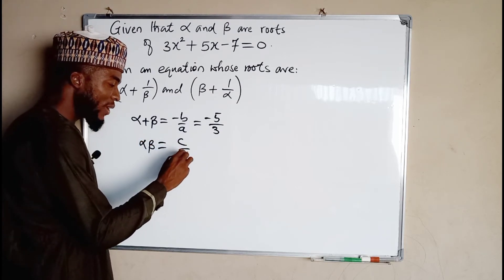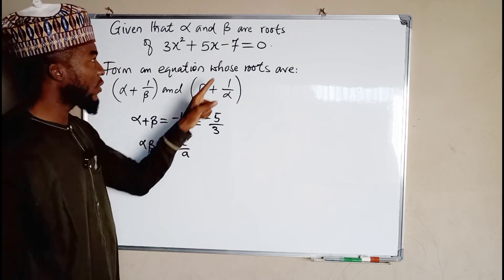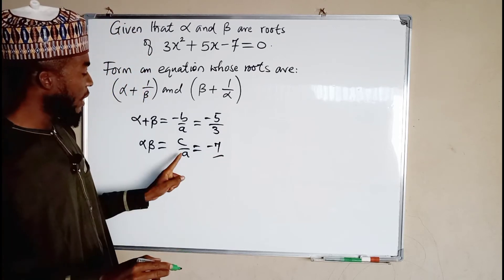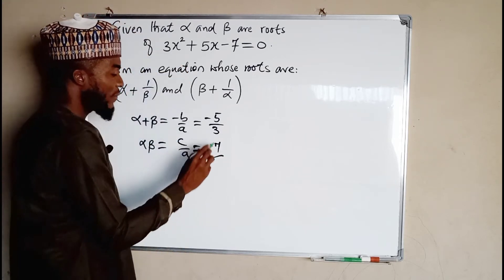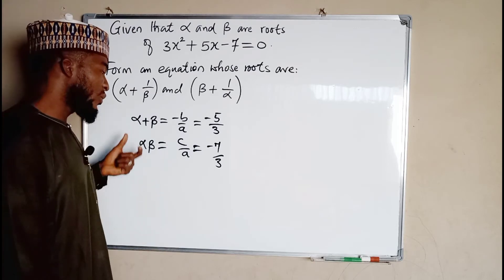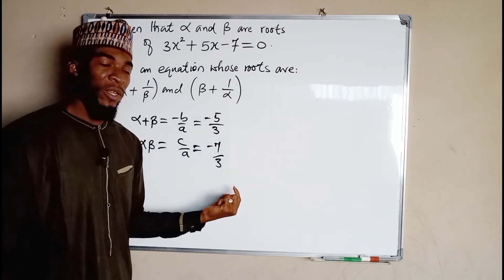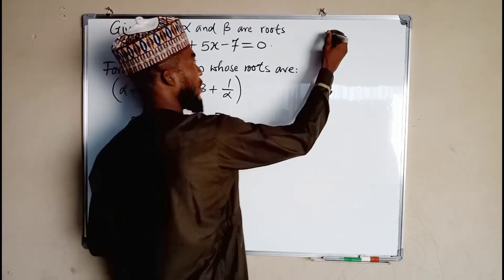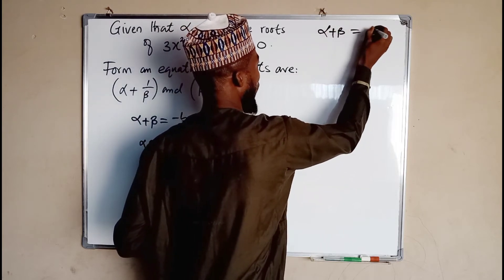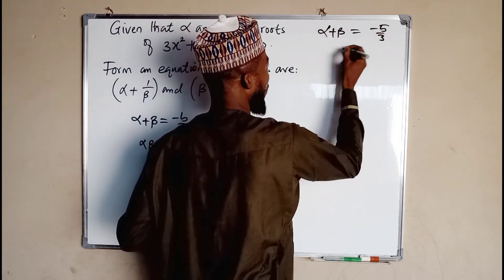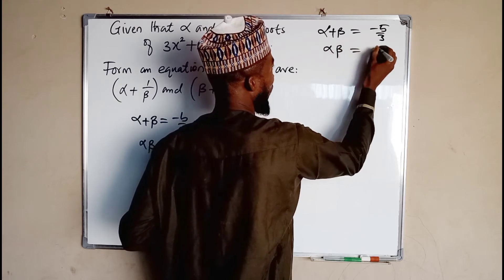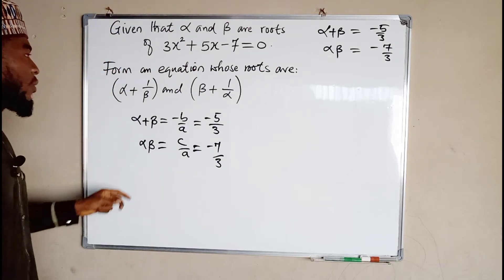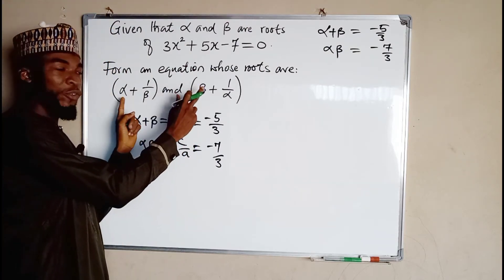For the product, we have alpha times beta, which is equal to C over A. C is the constant, which we have here as negative 7, and A is the leading coefficient, which we have here as 3. So the sum and the product are, respectively: for sum we have negative 5 over 3, and for the product we have negative 7 over 3. Now let us find the sum and the product of these new roots.